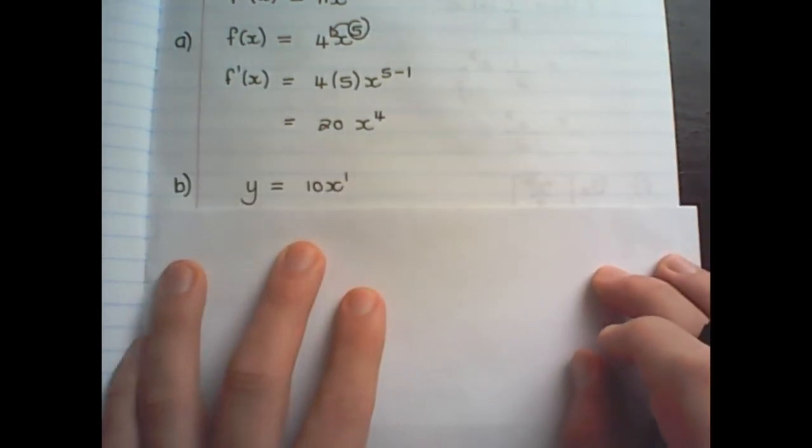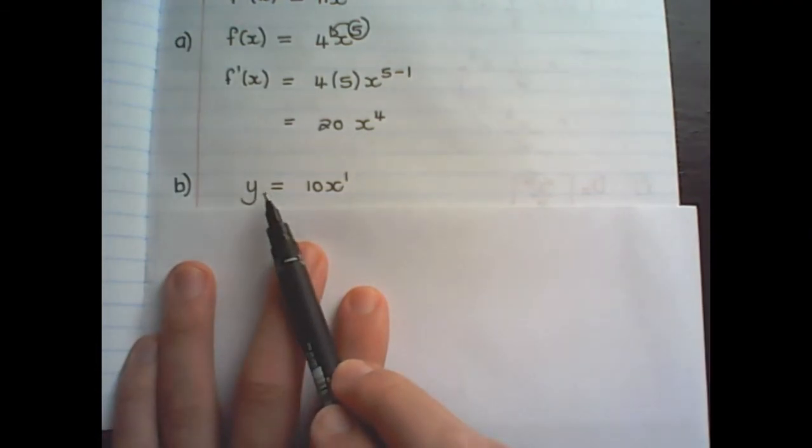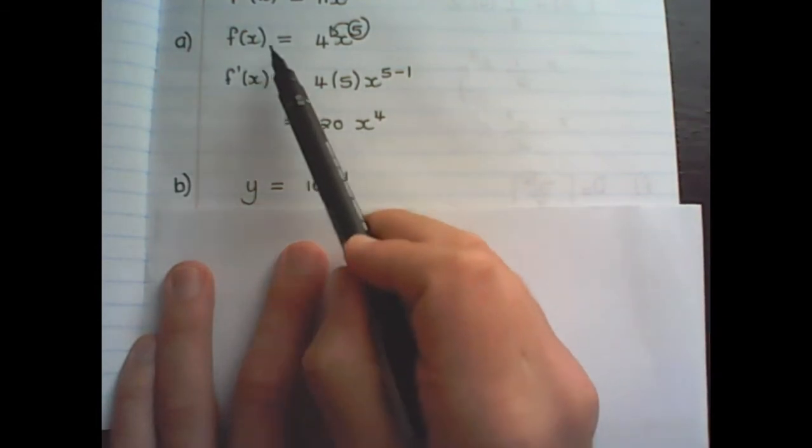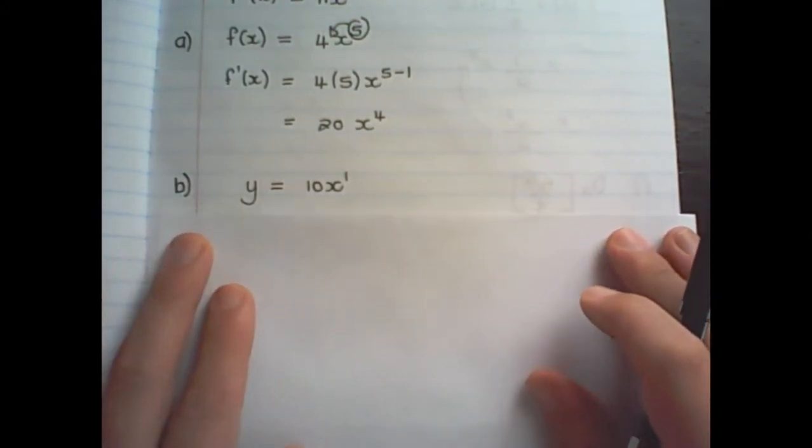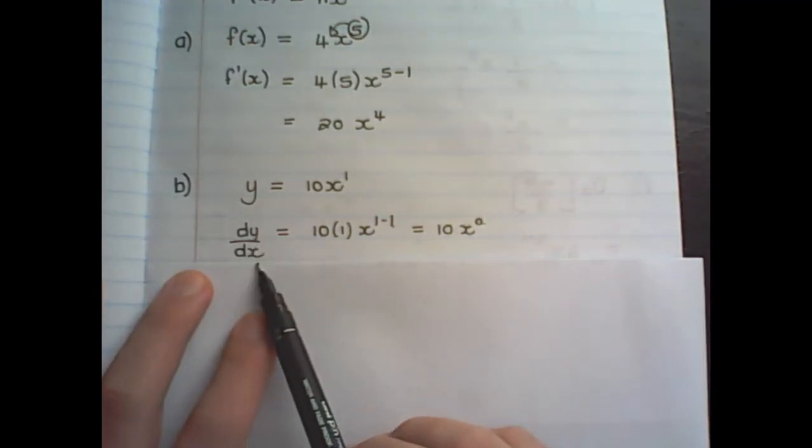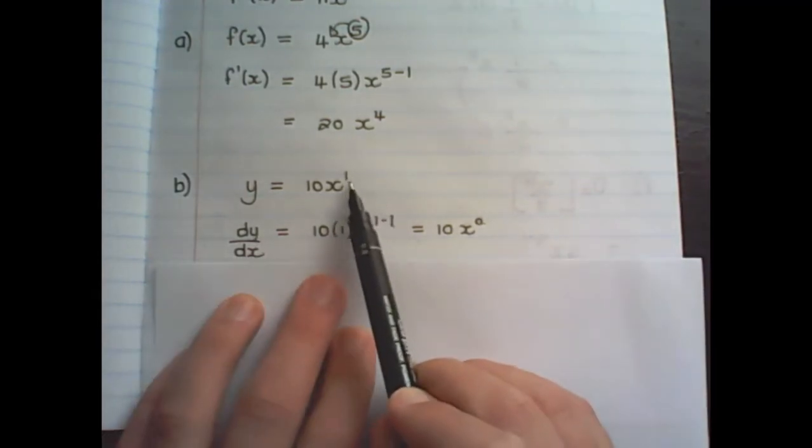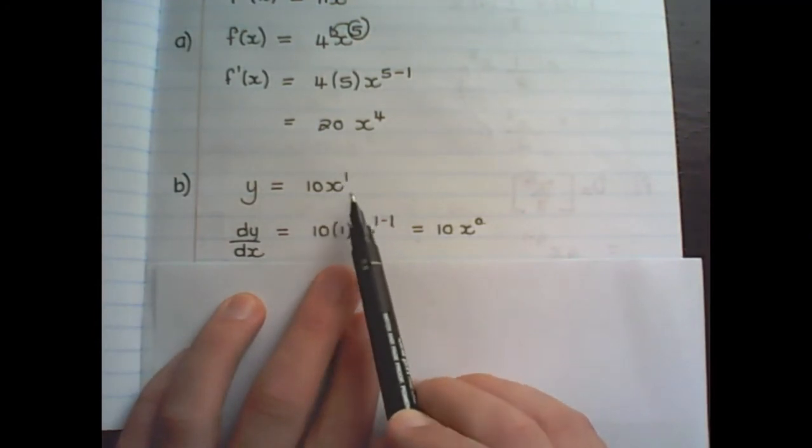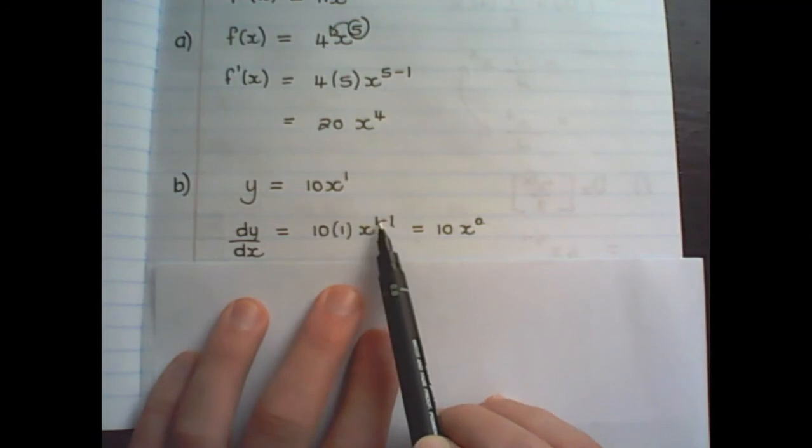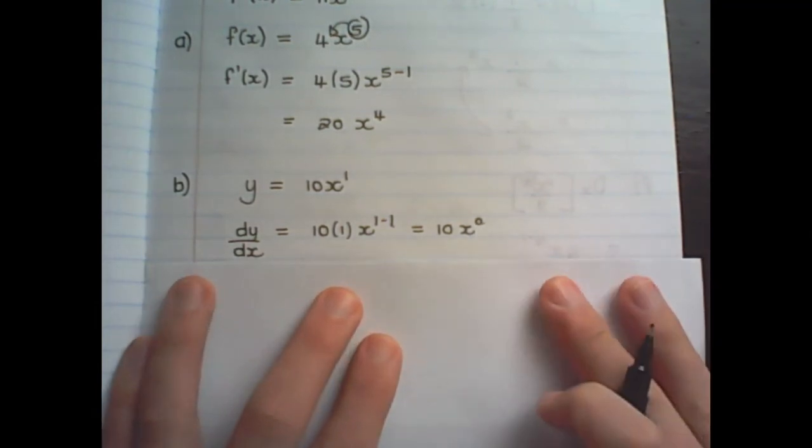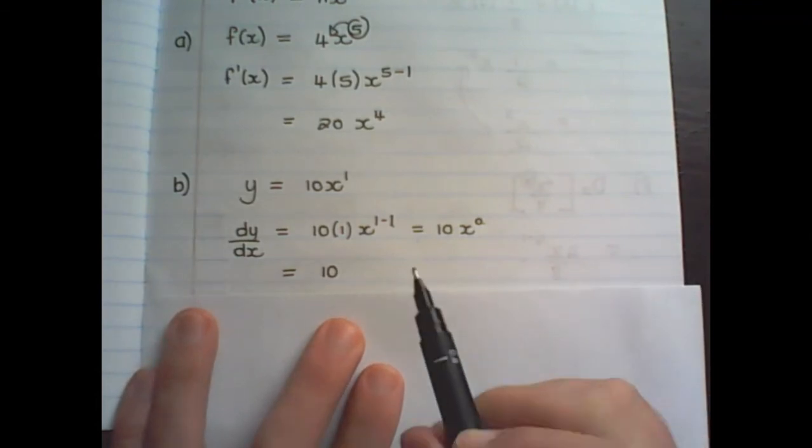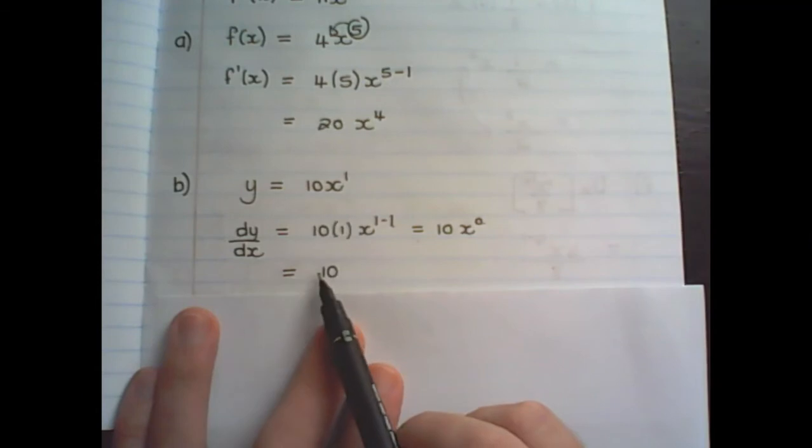Now, let us move on to a different notation. Here we have y equals 10x to the power of 1. And notice we are no longer using f(x), but y. So therefore, the notation for the derivative is dy over dx. But the rule stays the same. So I multiply the exponent of 1 with the value in the front, and I subtract 1 from the exponent. So this will be then 10 times x to the power of 0. And x to the power of 0 is 1. So the derivative of y equals 10x is 10.